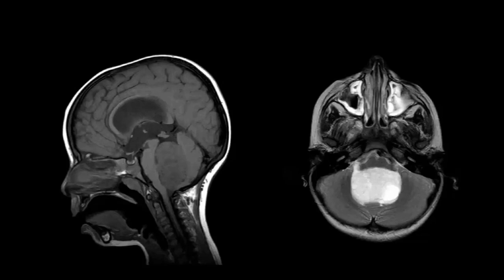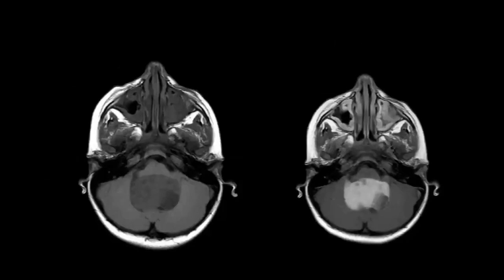I can see it is extending from a prominent ciscula. On gradient echo, it is not showing any signal voids or flow voids. It is not showing diffusion restriction because it is higher on ADC. On post-contrast, it is showing a heterogeneously enhancing component.